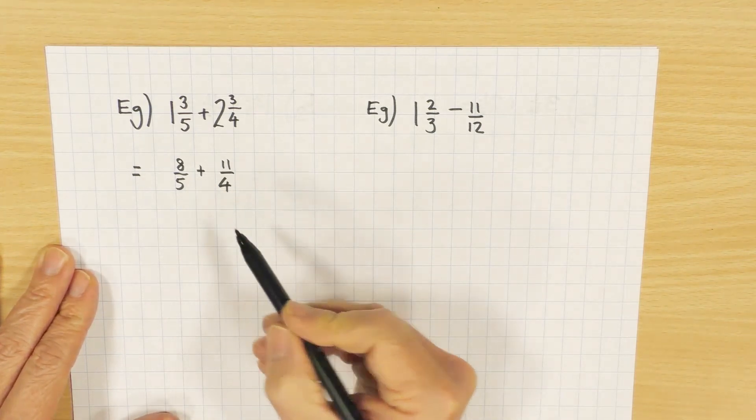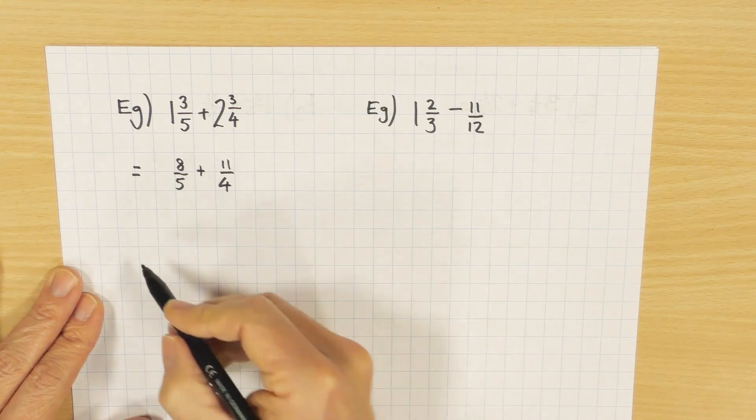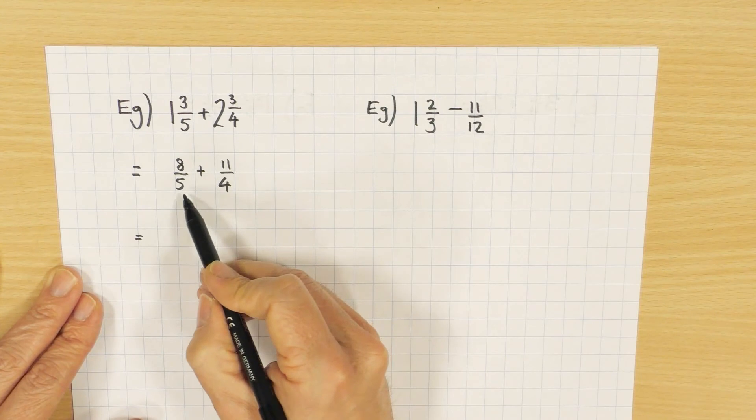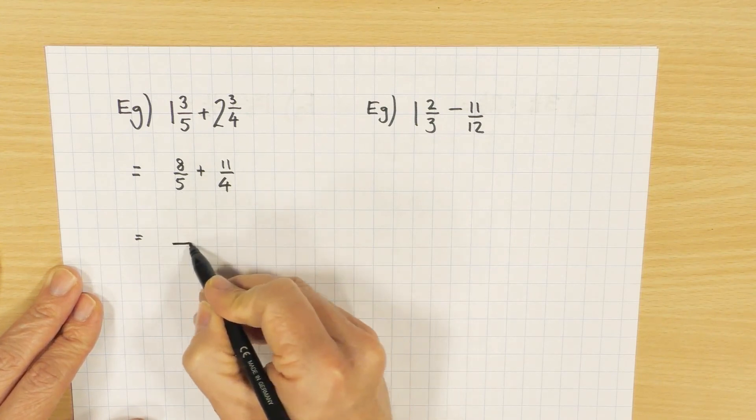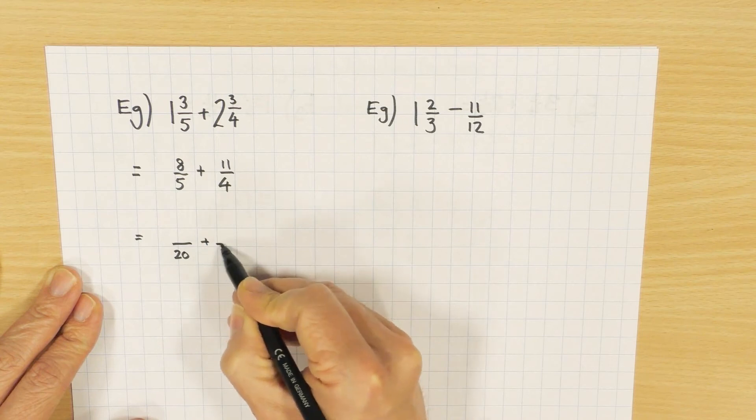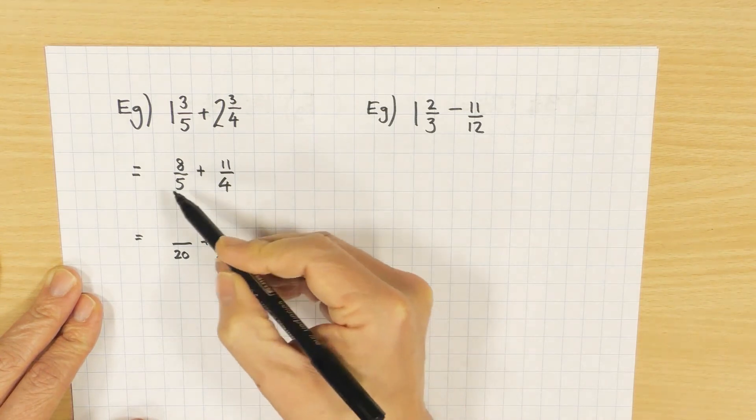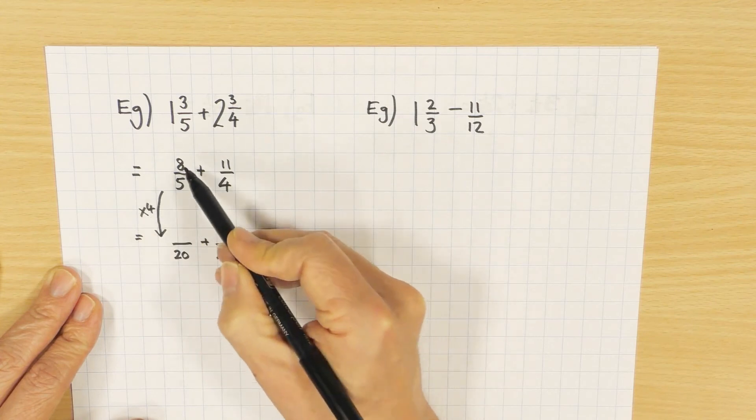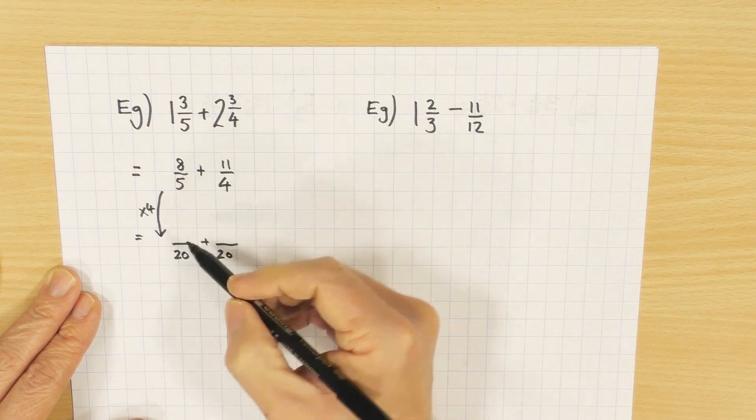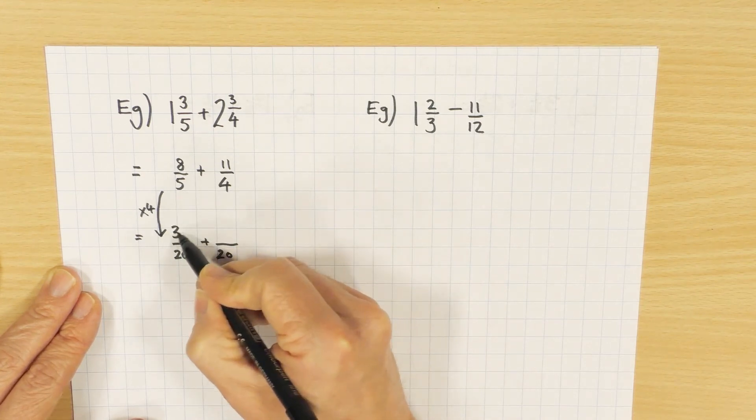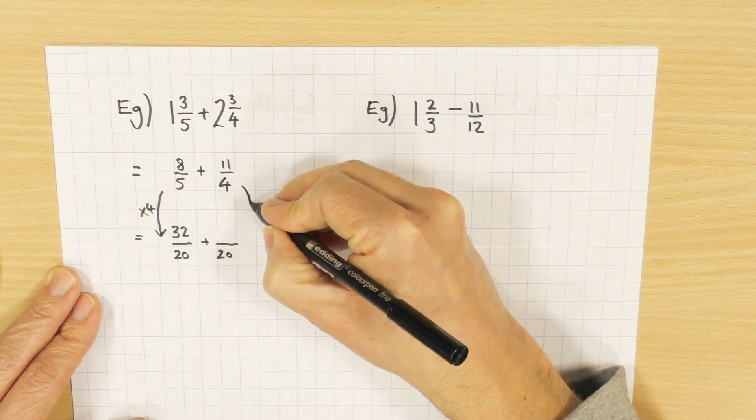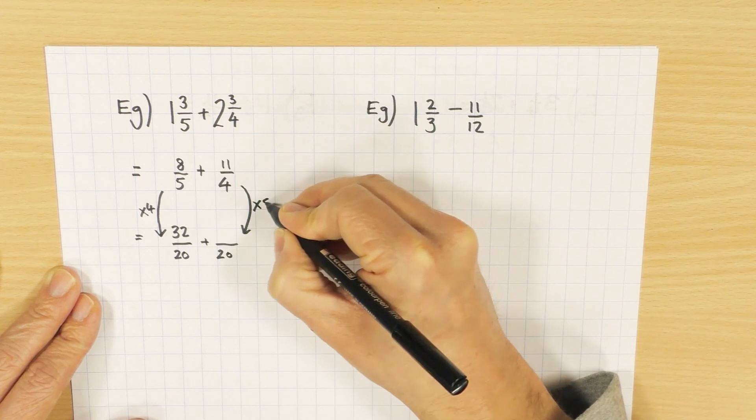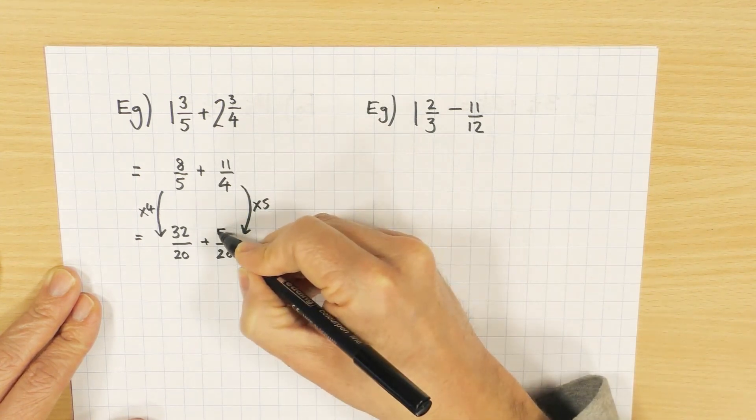So once I've gone to top heavy, it's the same method it was on the previous page. I'm just looking for a common multiple, or even better a lowest common multiple. In this case, the lowest common multiple, five times four, is 20. I've multiplied the left hand fraction by four, so I'm going to multiply both parts of the left hand fraction by four. Eight times four, 32. But this time I mustn't multiply by four because how do I go from four to twenty? Obviously I multiply by five. Eleven times five is 55.